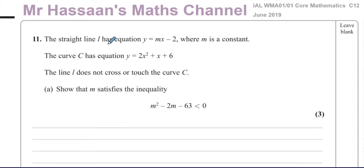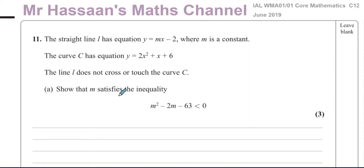The straight line L has equation Y equals MX minus 2, where M is a constant. The curve C has equation Y equals 2X squared plus X plus 6. The line L does not cross nor touch the curve C — so they don't intersect at all. Show that M satisfies the inequality M squared minus 2M minus 63 is less than 0.